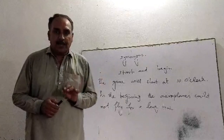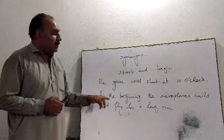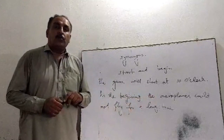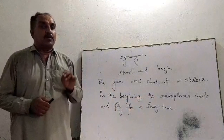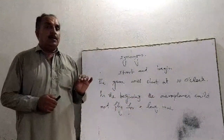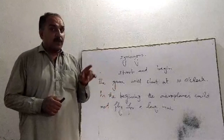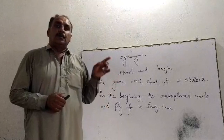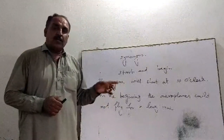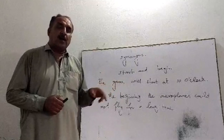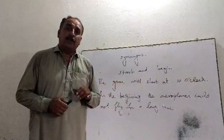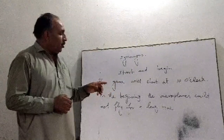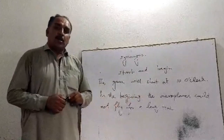But when we don't know about the proper time, we use 'begin.' For example, in the beginning, aeroplanes could not fly for a long time. What time was that beginning? We don't know — was it just soon after the start of flying, or 10 years after the first flight, or 20 years? However, 'the game will start at 10 o'clock' — here we know the exact time, so that is 'start.'